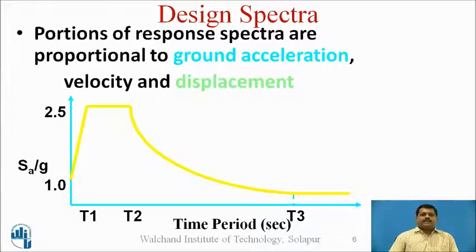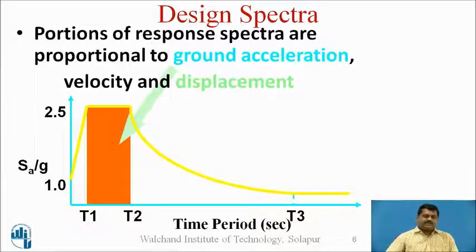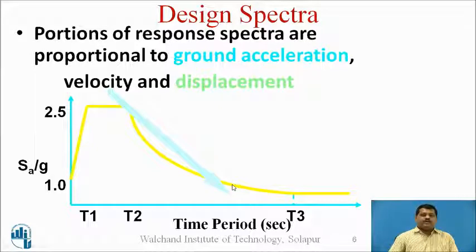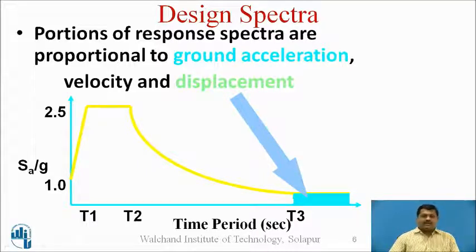Now this design spectra: the portions of the response spectra are governed by different parameters. The constant portion showing the value of 2.5, the highest value of SA/g, is governed by ground acceleration. The next parabolic profile after that constant plateau is governed by the velocity parameter of the earthquake shaking. After T3, the constant portion is governed by the displacement parameter of the motion.